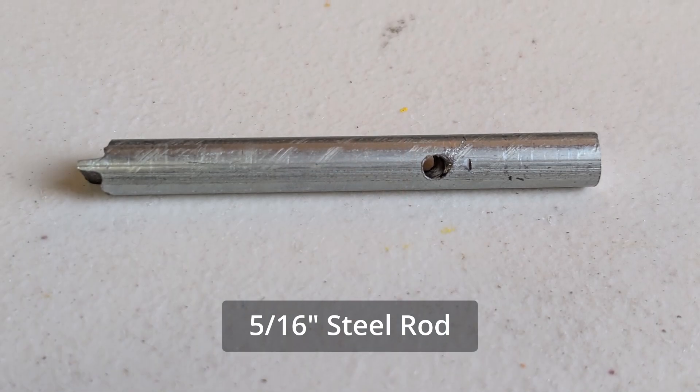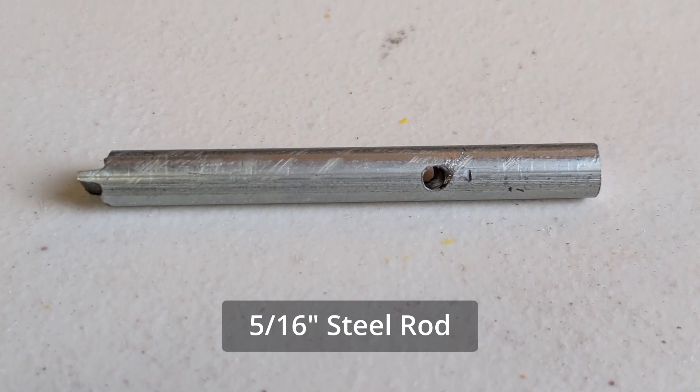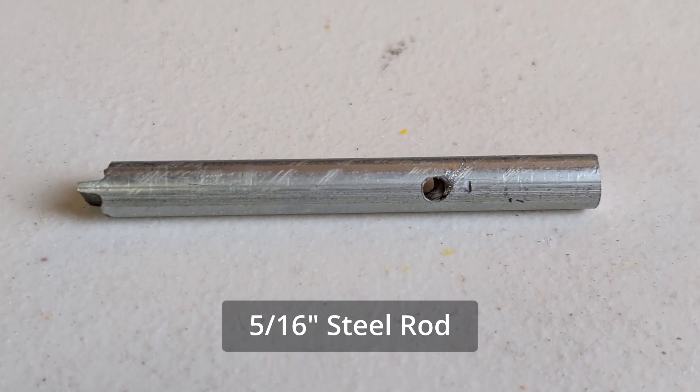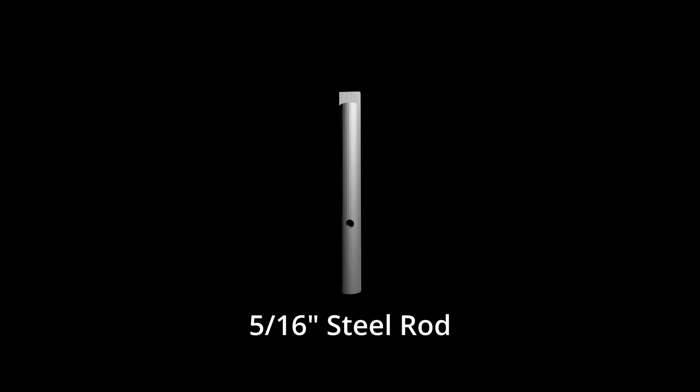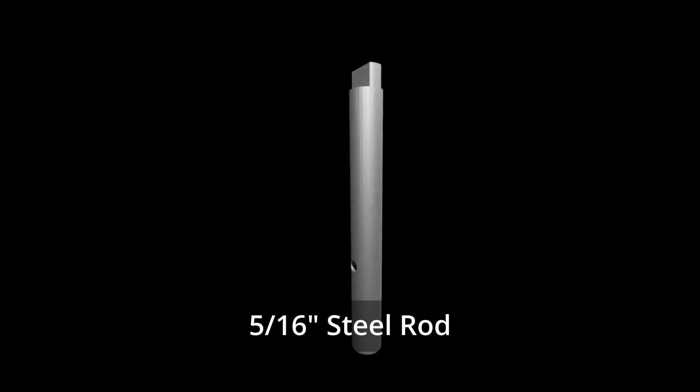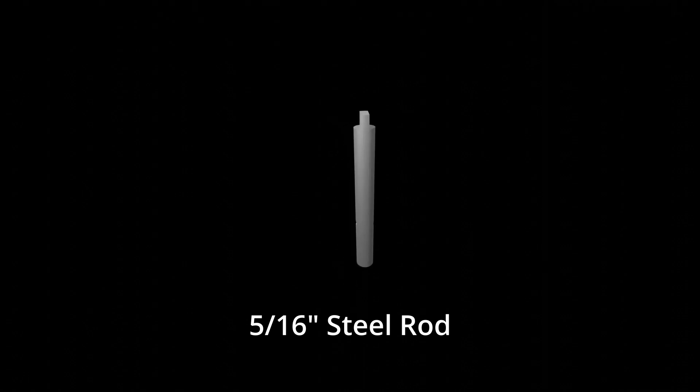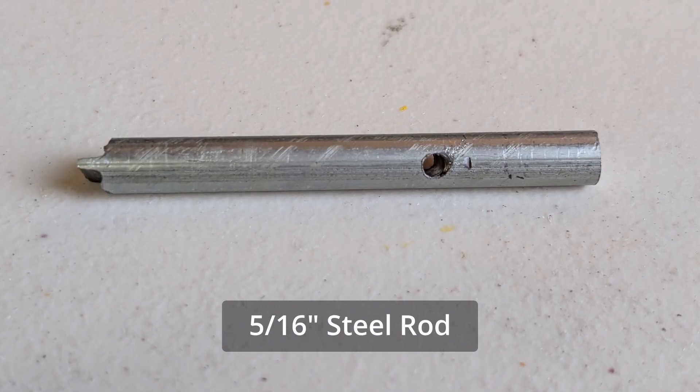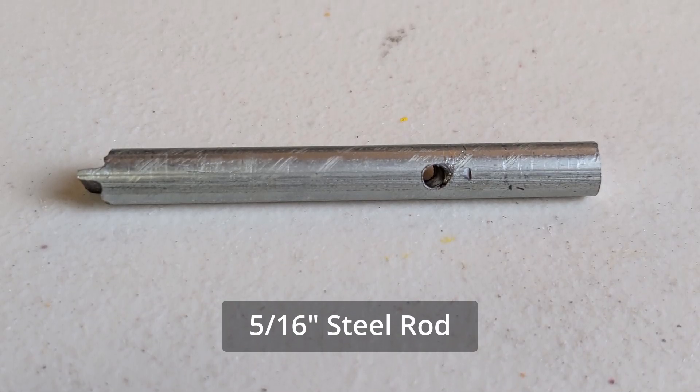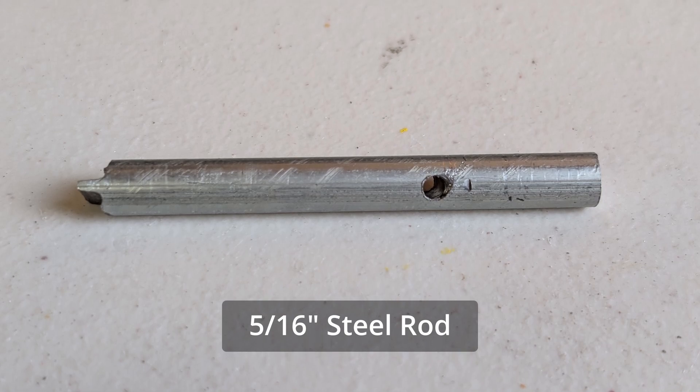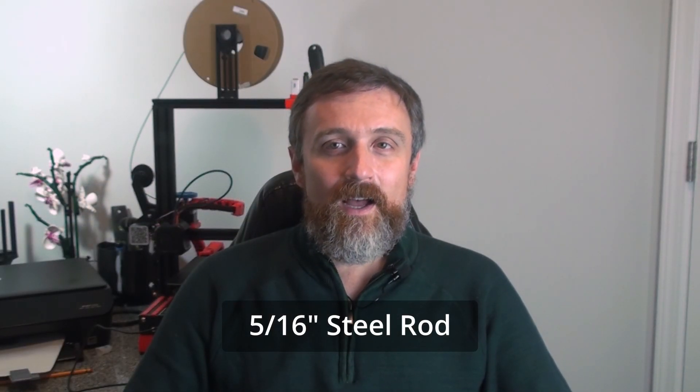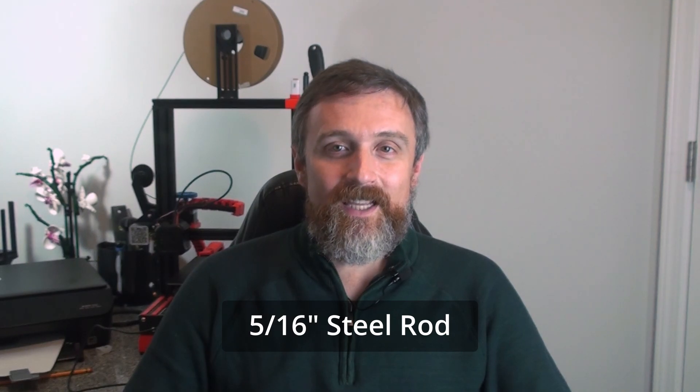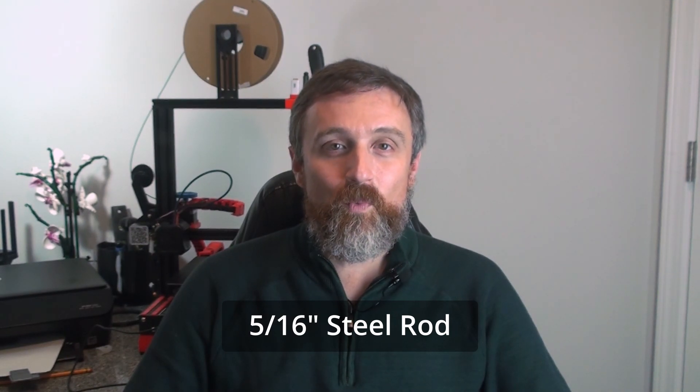You'll need a 5/16 inch steel rod cut to 71 millimeters. You then need a 3 millimeter hole drilled through the middle at around 24 millimeters from one end. And on the other end, you need to cut it so it's around 2 millimeters wide at the top and sinks in around 5 millimeters from the end. This is for the winding key.